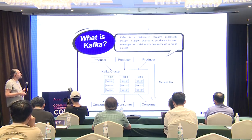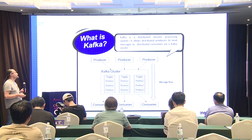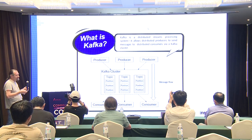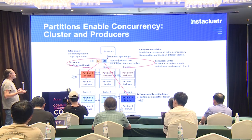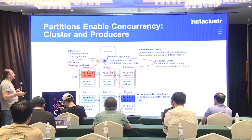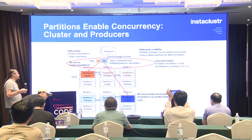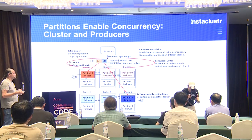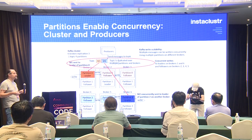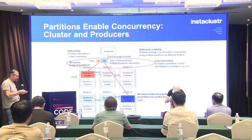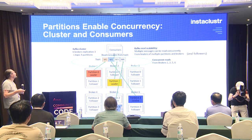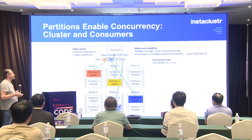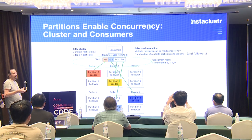Kafka allows distributed producers to send messages to distributed consumers via a Kafka cluster. Partitions are an essential concept in Kafka — they enable concurrency at the cluster level, first on the producer side. Producers write messages to topics running on the Kafka cluster, and concurrency is enabled because topics are broken up into multiple partitions spread across all the brokers in the cluster. For read scalability, multiple messages can be read concurrently from leaders and followers of partitions across brokers.